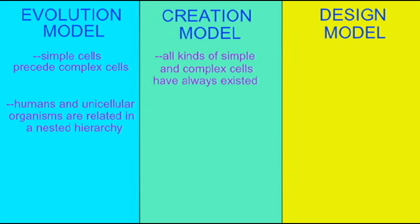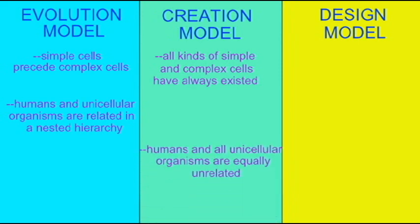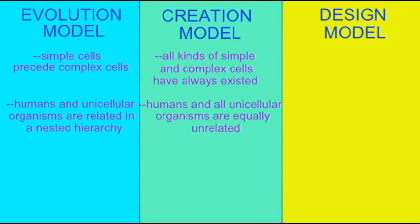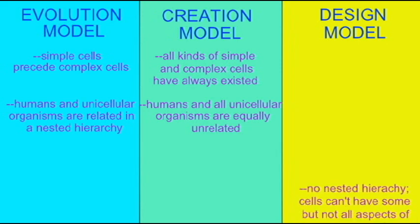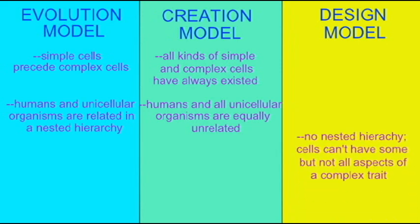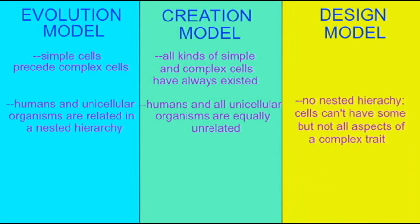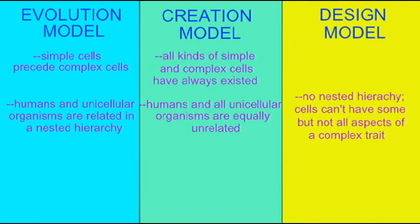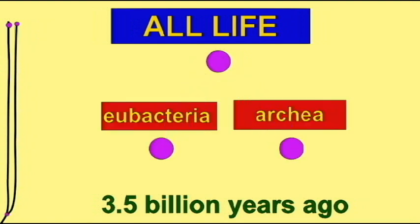In other words, humans would be more related to some microorganisms than others. In contrast, in the creation model, humans and all unicellular organisms are not related, and they are equally unrelated. So not only are similarities not expected, there is certainly no pattern of similarities which is expected. In the design model, there is no nested hierarchy of relationship between organisms because no such relationship is possible — cells could not have some, but not all, of the aspects of a complex trait.